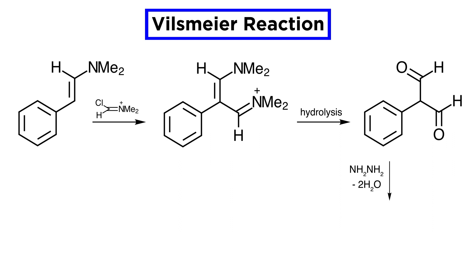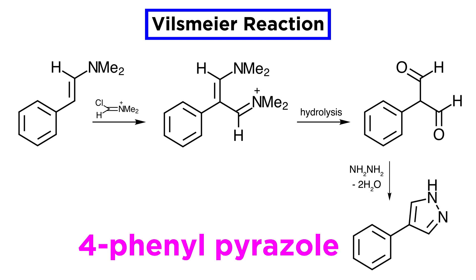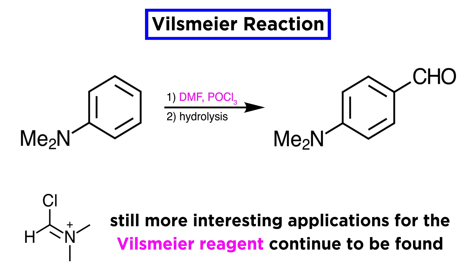For one useful example, hydrazine smoothly condenses with the dialdehyde and leads to 4-phenyl-pyrazole. In this tutorial, we have only scratched the surface with the applications of the Vilsmeier reagent. Research continues today to find more interesting applications for this excellent electrophile with a number of nucleophilic substrates. Perhaps one day you can think of a new application yourself.